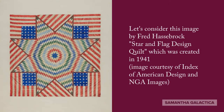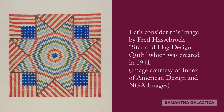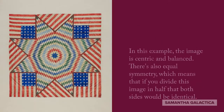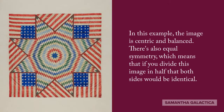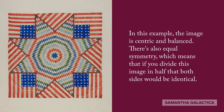Let's consider the symbol of the frog, which was created all the way back in 1941. In this example, the image is centric and balanced. There's also equal symmetry, which means that if you divide this image in half, both sides would be identical.